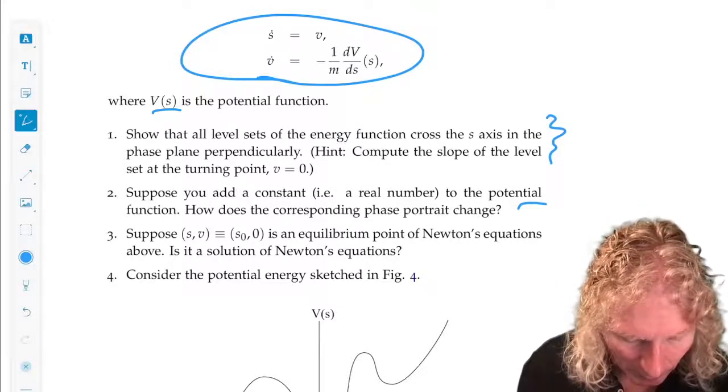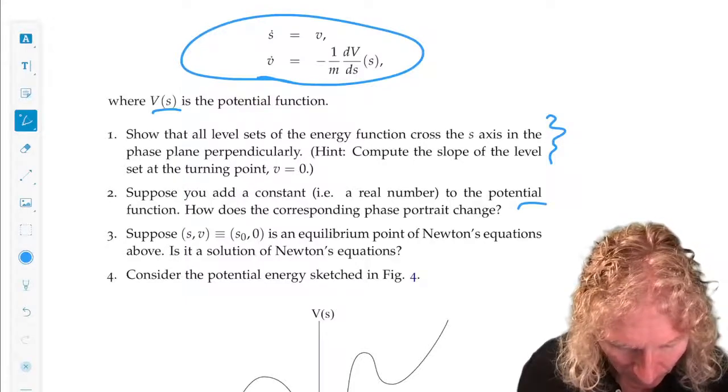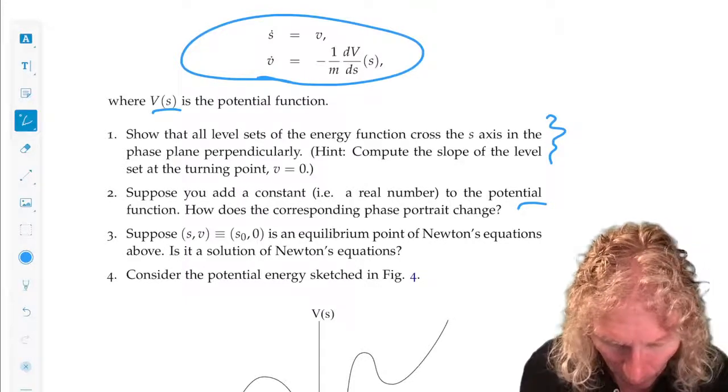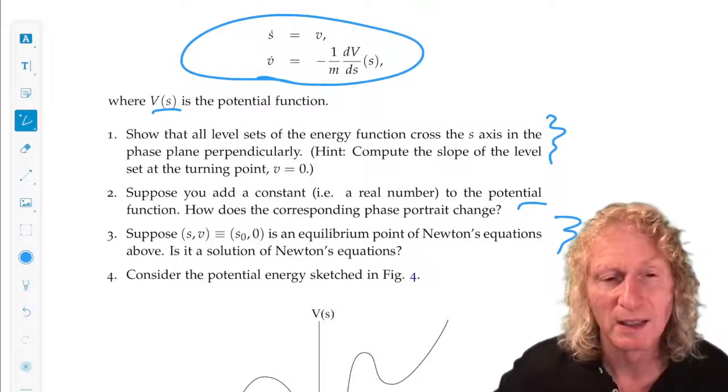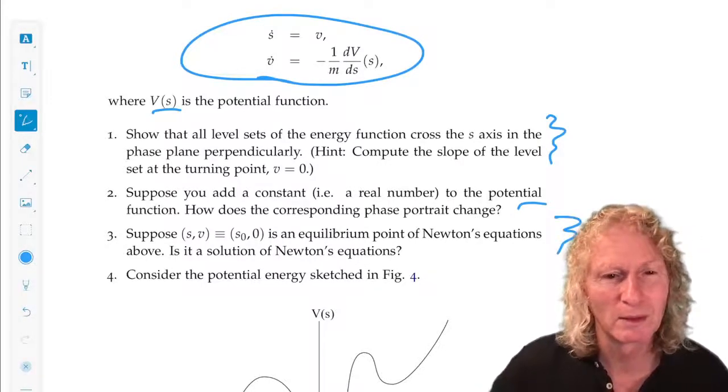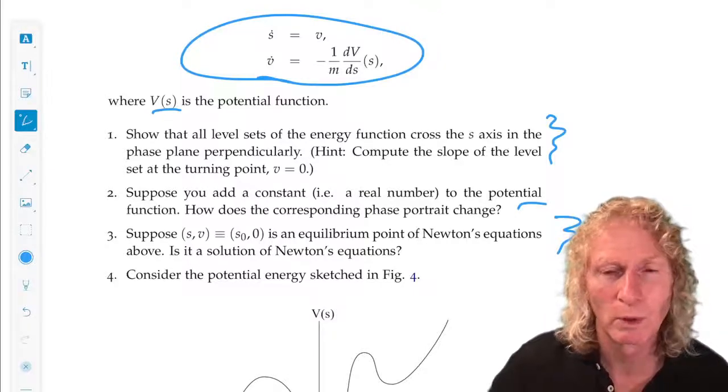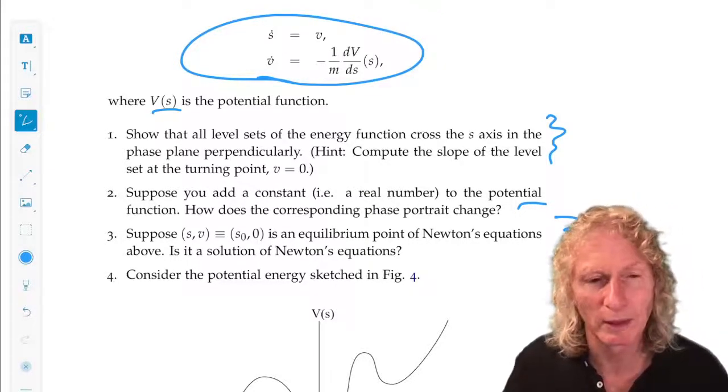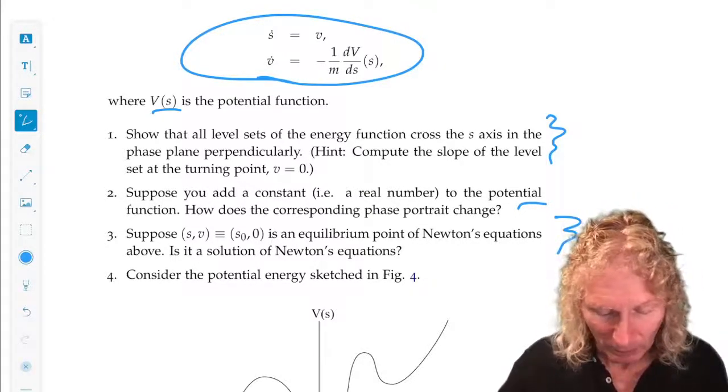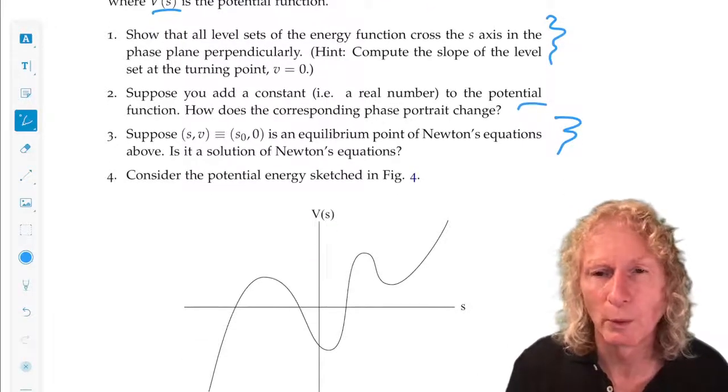Suppose in problem three, s, v equals s naught, zero is an equilibrium point of Newton's equations. Is it a solution of Newton's equations? Now I discussed this what I thought was carefully a couple of lectures ago. It's a little bit of a subtle point so I want you to revisit it.